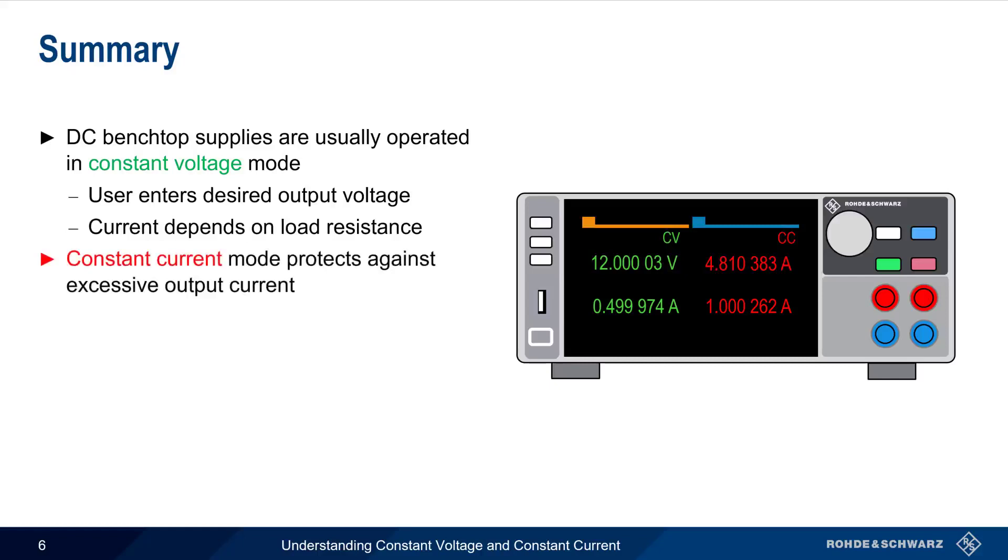Constant current mode is used to protect the load from excessive output current. The user enters the maximum allowable output current, and if necessary, the supply will automatically lower the output voltage in order to keep the output current below this limit.